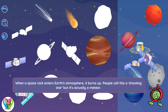When a space rock enters Earth's atmosphere, it burns up. People call this a shooting star, but it's actually a meteor.